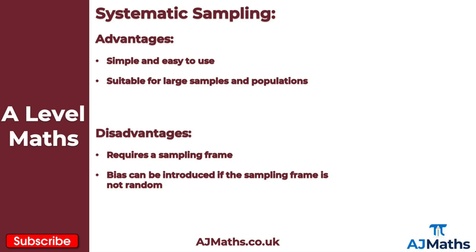Looking at systematic sampling, we have two advantages: it's simple and easy to use, and it's suitable for large samples and populations. However, there are also two disadvantages: it requires a sampling frame, and bias can be introduced if the sampling frame is not random.